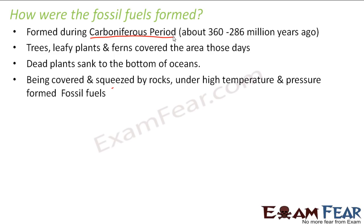So to review: in the carboniferous period we had more trees, plants, ferns, and swamps. As these died they sank to the bottom of the oceans and gradually formed a layer of spongy material. They got covered with sand and clay, which over several years formed rocks that pressed down and squeezed the remains, and under high temperature and pressure they finally formed coal, oil, or natural gas.